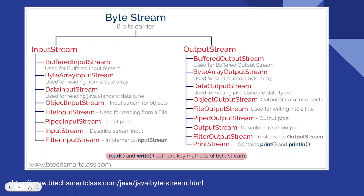For instance, if you are going to read binary data or byte information from the console, you will be using the buffered input stream. Or if you are getting the information from a file, then you will be using the file input stream or file output stream.